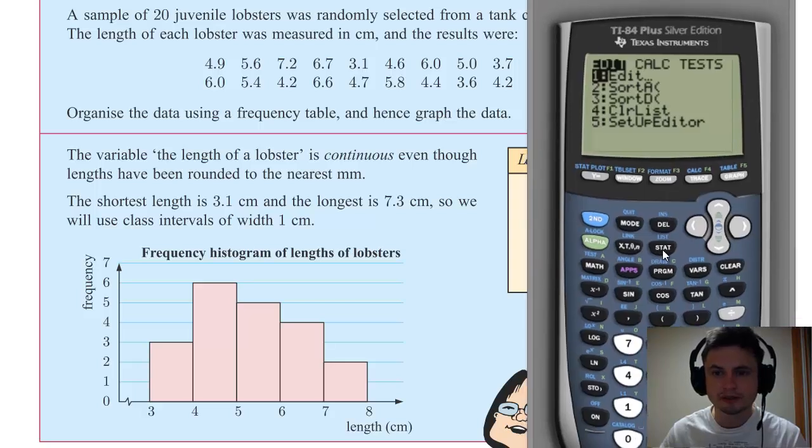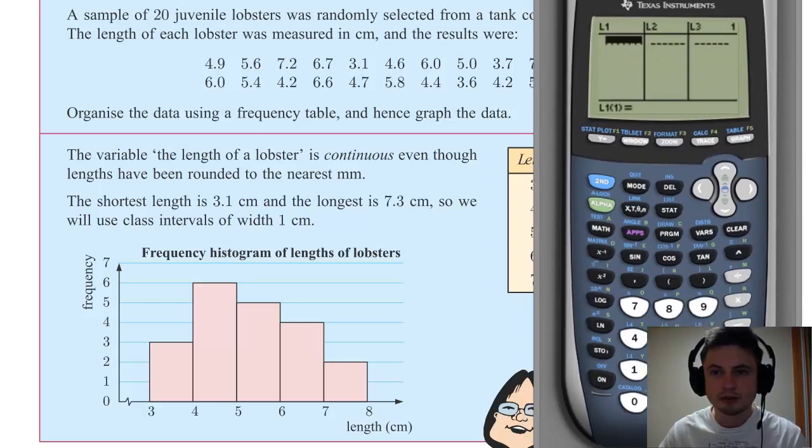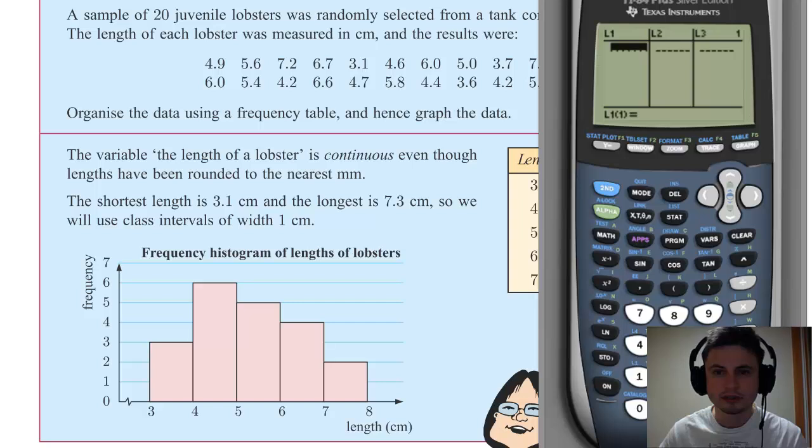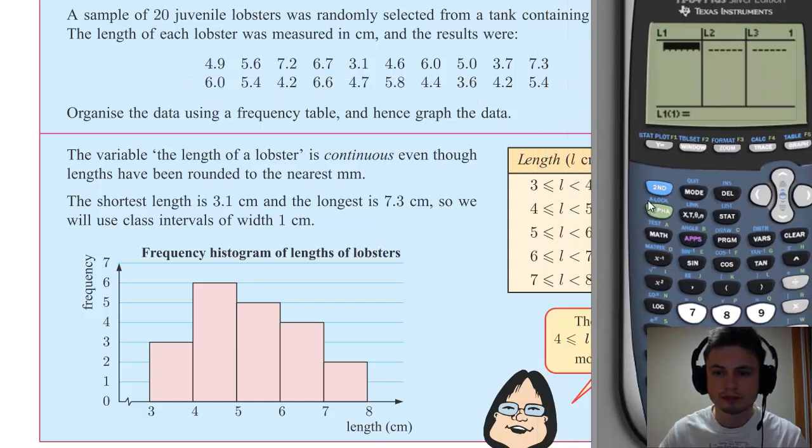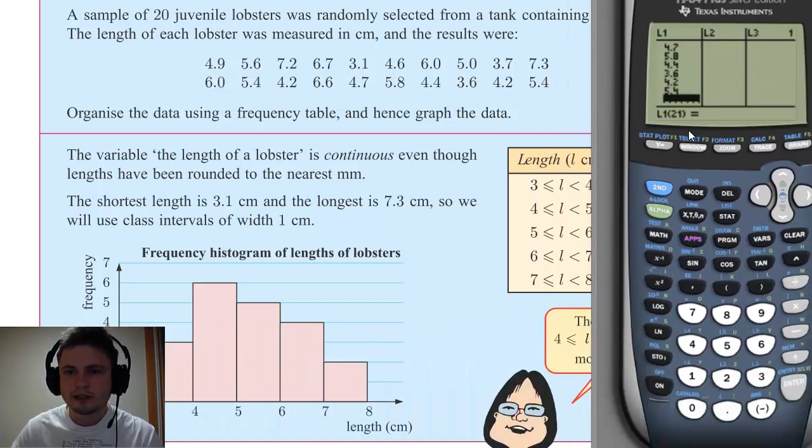So I'm gonna bring up my GDC, and what you need to do is you have to click STAT, which is obviously the statistics button, and go into EDIT. So you press number one, and into your L1 column you're going to enter all of these numbers, one by one basically.